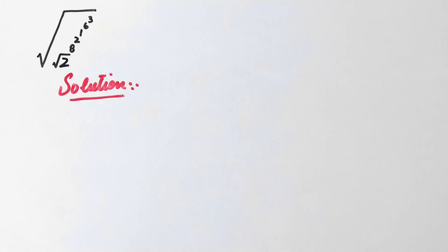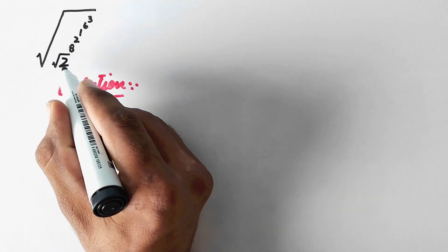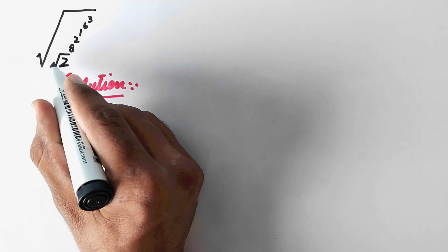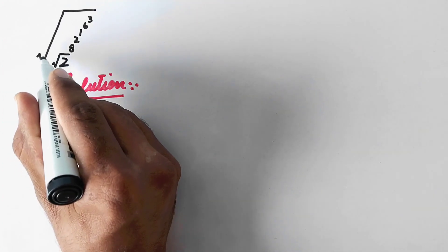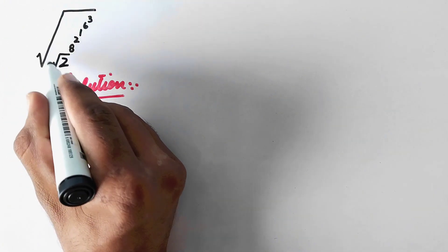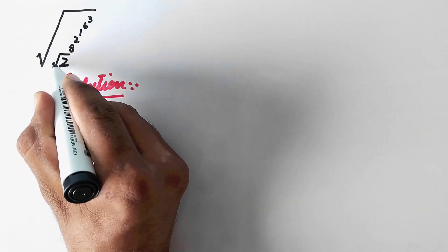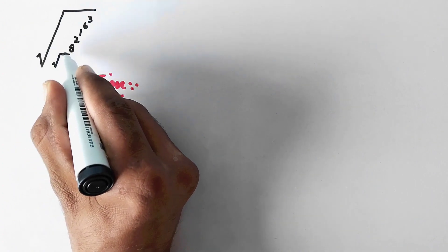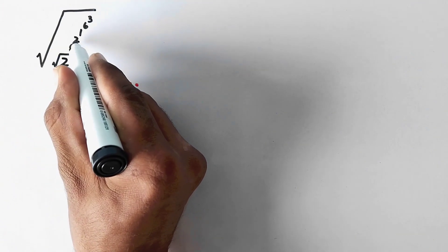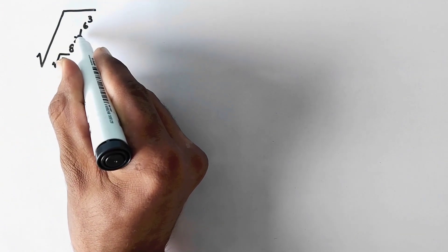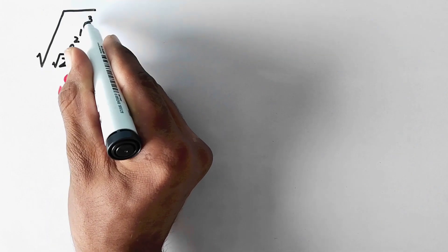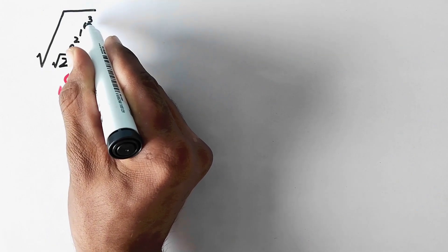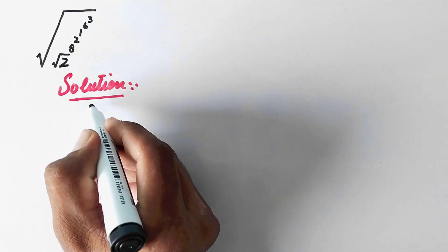Hello everyone, welcome to Explode Maths. Today we are going to solve this Olympiad math question: square root times square root 2 raised to power 8, to power 2, to power 1, to power 6, to power 3. So let us see the solution.